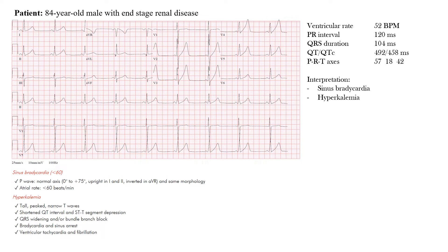Here we have a 12-lead ECG of an 84-year-old male with end-stage renal disease. Take a moment to pause the video and look at it, then we'll go through this together. This patient with end-stage renal disease is coming in with this EKG, and the main features I want to get across are hyperkalemia — we're going to focus on hyperkalemia and the findings we see in this.